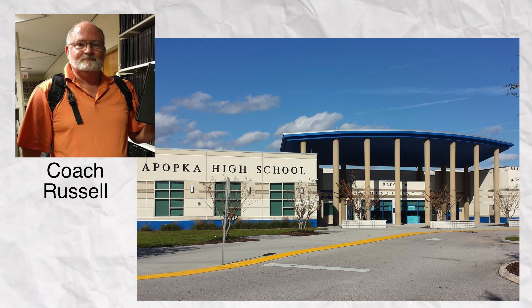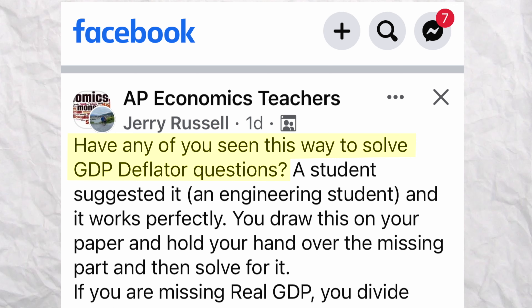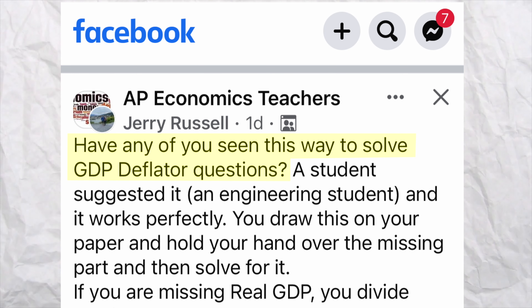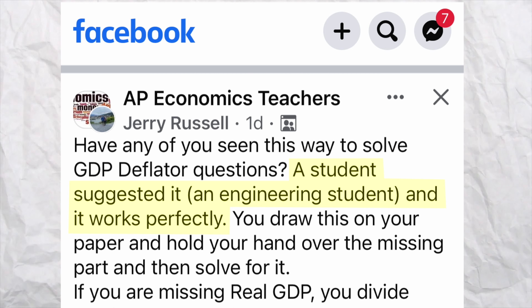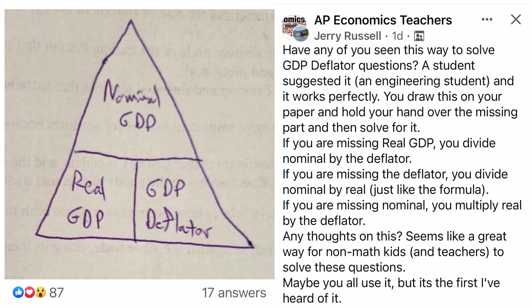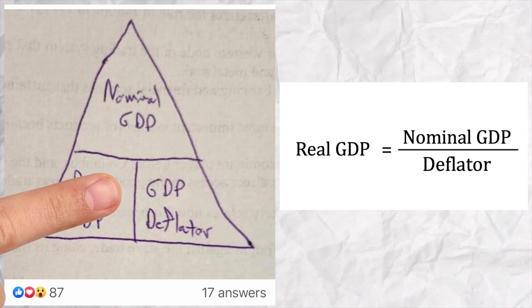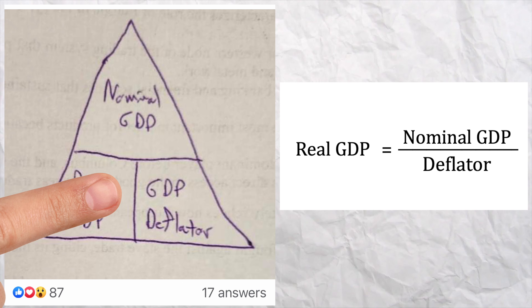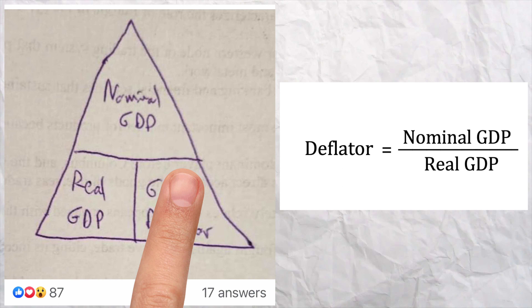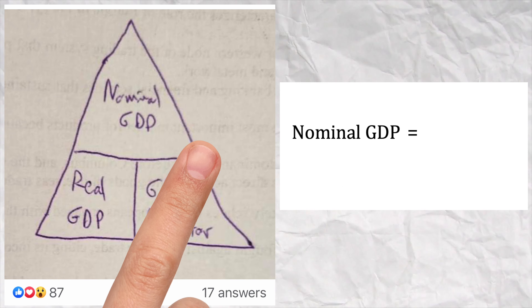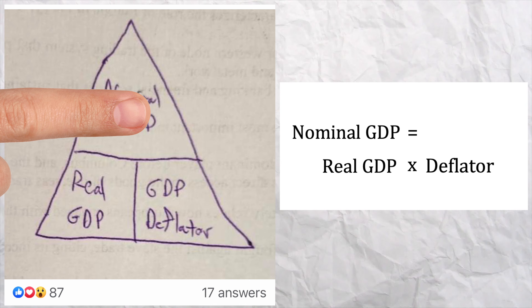A few days ago, I saw something awesome on the AP Economics Teacher Facebook page. It was a post by Mr. Russell at Apopka High School in Florida. Have any of you seen this way to solve GDP deflator questions? A student suggested it and it works perfectly. You draw this on your paper and hold your hand over the missing part and then solve it. If you're missing the real GDP, you divide the nominal GDP by the deflator. If you're missing the deflator, you divide the nominal by the real, just like the formula. If you're missing the nominal,